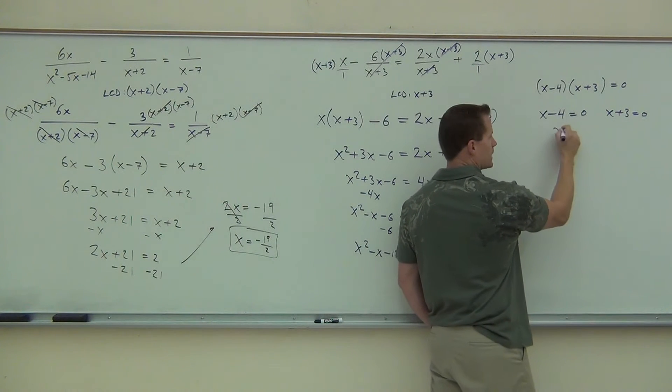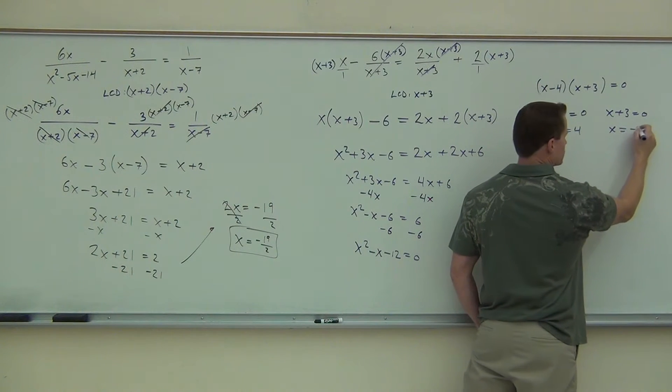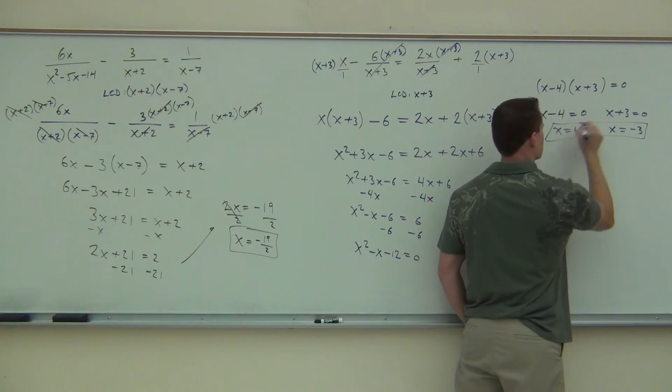We add 4, we get x equals 4. We subtract 3, we get x equals negative 3. And we're done.